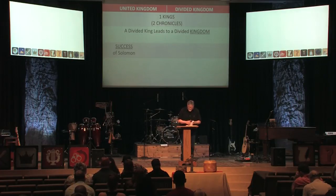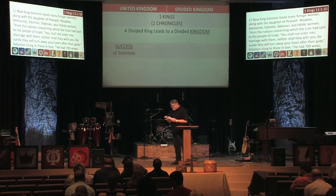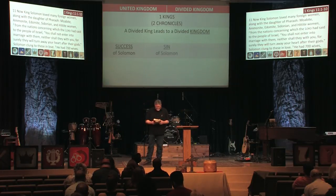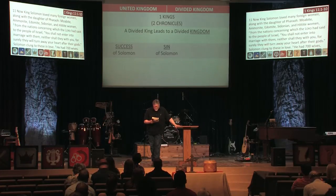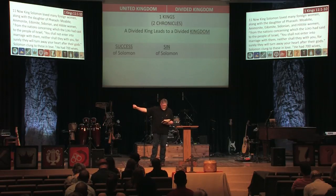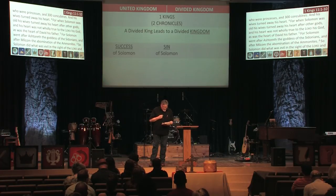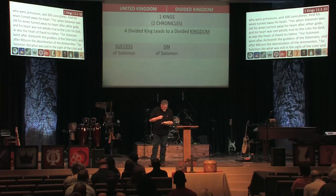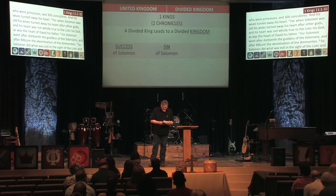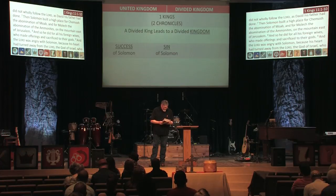In 1 Kings chapter 11, verse 1: 'Now King Solomon loved many foreign women — along with the daughter of Pharaoh, Moabite, Ammonite, Edomite, Sidonian, and Hittite women — from the nations concerning which the Lord had said to the people of Israel, You shall not enter into marriage with them, neither shall they with you, for surely they will turn away your heart with their gods. And Solomon clung to these in love. He had 700 wives who were princesses and 300 concubines, and his wives turned away his heart. For when Solomon was old, his wives turned away his heart after other gods, and his heart was not wholly true to the Lord his God, as was the heart of David his father.'